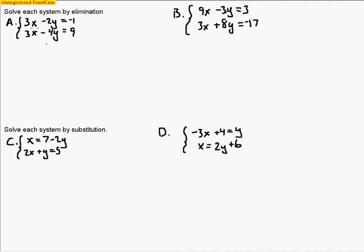Use elimination when x's, y's, equal signs, and constants are all in line. All we have to do is add the equations together, but we need a variable to cancel. So if you add right now, we don't get the 3x's to cancel.